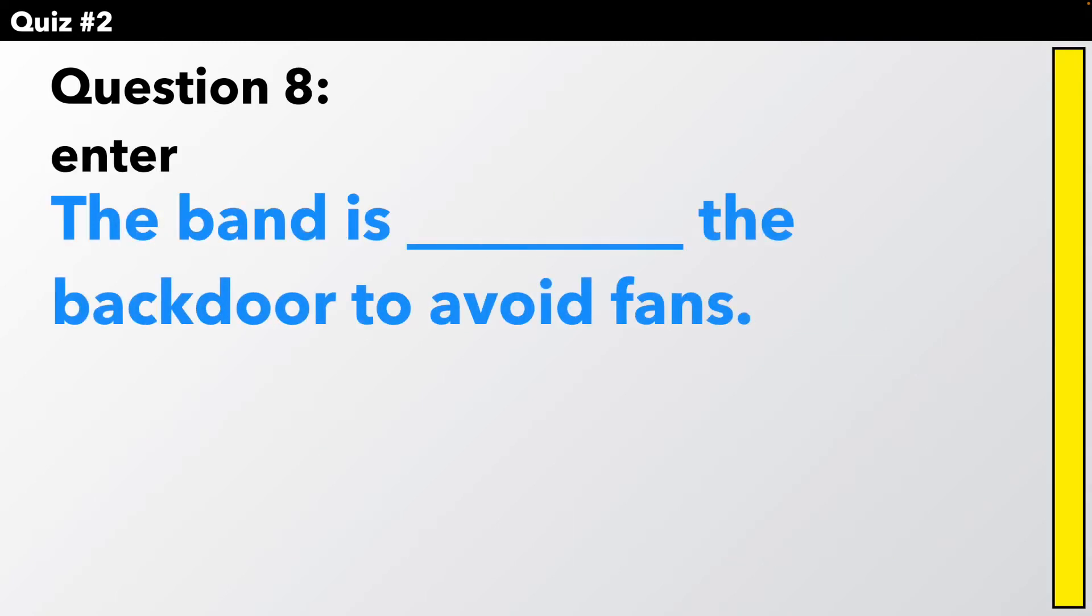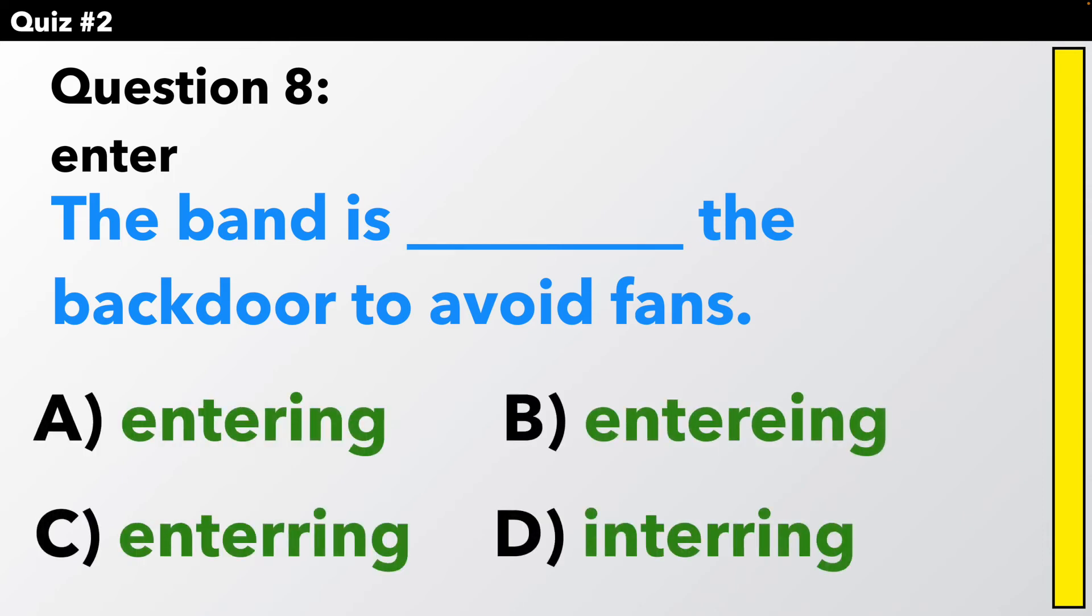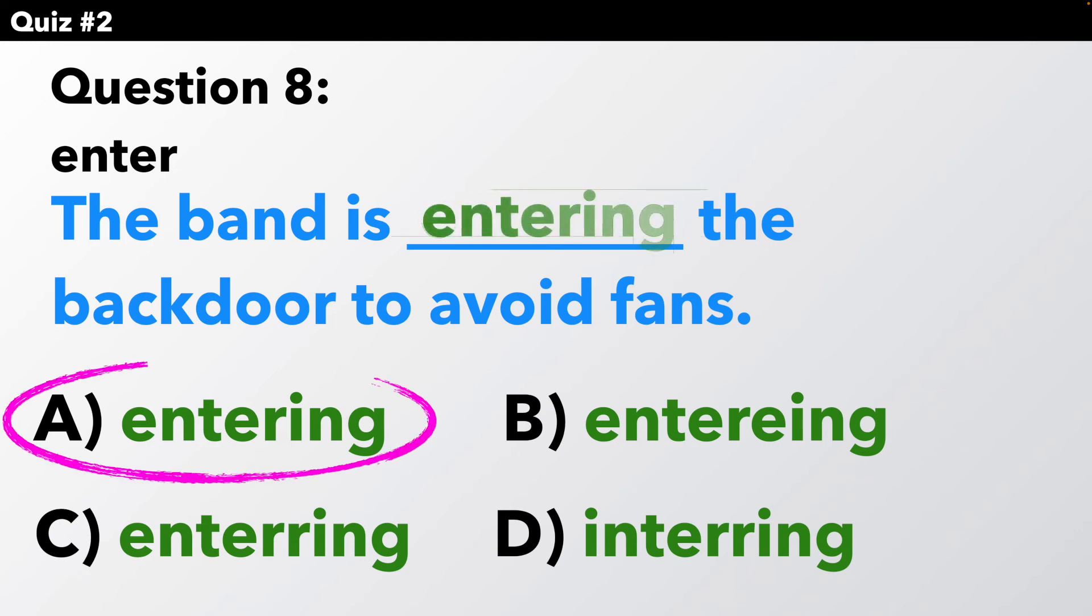Question eight. Enter. The band is entering the back door to avoid fans. Which is the correct spelling of entering? The answer is A. There is no stress on the second syllable, so we don't change it at all.